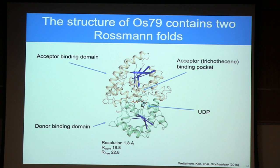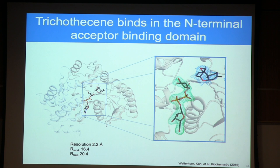To solve this problem, I co-crystallized OS79 with the non-hydrolyzable substrate analog UDP-2-deoxy-2-fluoroglucose — essentially UDP glucose with a fluorine atom instead of a hydroxyl at the two position. I also co-crystallized with trichothecin, which lacks a hydroxyl at the three position, so the glucose moiety cannot be transferred and substrates are locked in the active site. Very good electron density allowed unambiguous placement of the UDP glucose analog; however, the electron density for the trichothecine substrate represents only half occupancy and is not great.